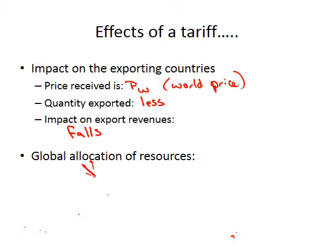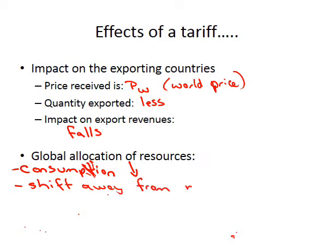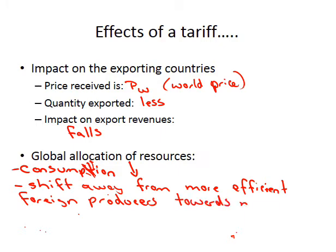From the standpoint of global allocation of resources: consumption is down, and there is a shift away from more efficient foreign producers towards more inefficient domestic producers.